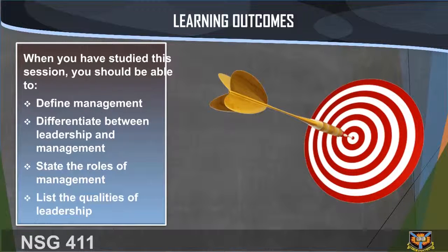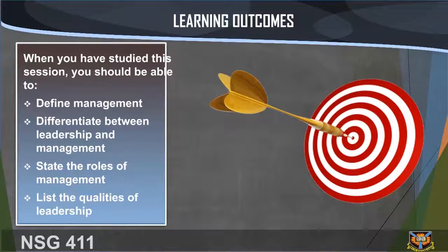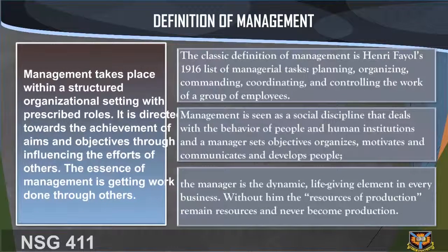Learning outcomes: when you have studied this session you should be able to: one, define management; two, differentiate between leadership and management; three, state the roles of management; four, list the qualities of leadership.